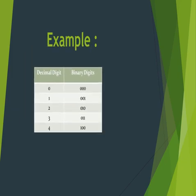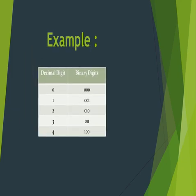Let's take an example. As you can see, for the decimal digit zero, the binary digit is 000; for one, the binary digit is 001. So you can say zero is zero and one is one. Similarly, for two, the binary digit is 010 — so whenever you type 2 in a computer, the computer first converts it into the binary digit 010. For three, we represent it as 011, and for four as 100.